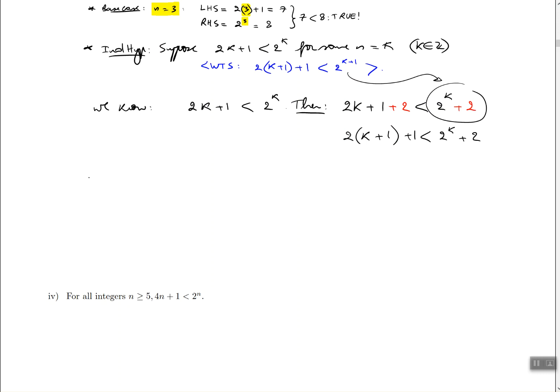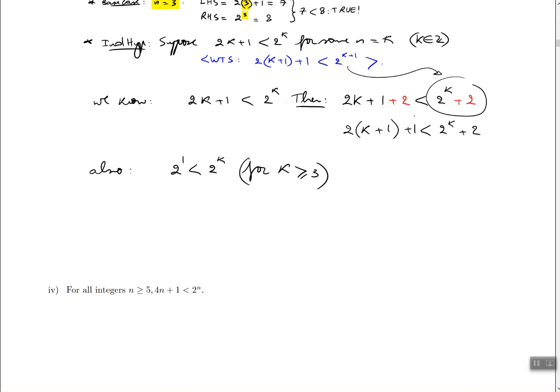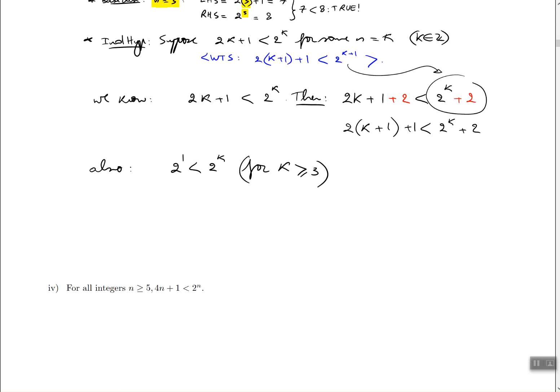Well first, do you agree that 2 is smaller than 2 to the power of k for k greater than or equal to 3? Okay, so stop the video and just think about it for a second. Do you believe that 2 to the power of 1 is smaller than 2 to the power of 3 or 2 to the power of 4 or 2 to the power of whatever? If you believe that, then we can proceed forward with the next step of the proof.